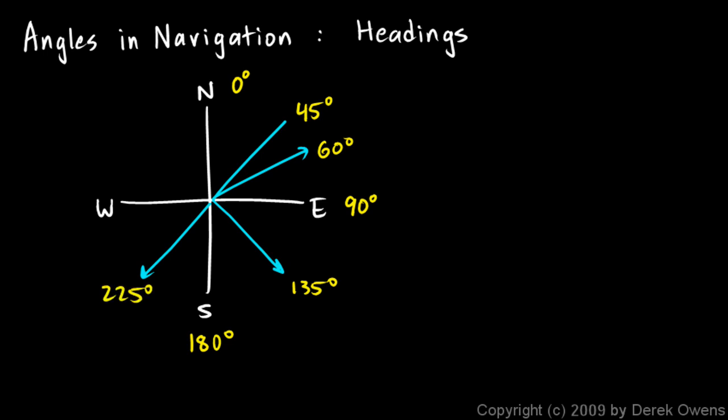Due west would be a 270 degree heading. That rotation or that angle is 270 degrees, 270 degrees clockwise from north. If you're going northwest, that would be a heading of 315 degrees. This rotation is 315 degrees. 360 degrees takes you full circle. A heading of 360 degrees is the same thing as a heading of 0 degrees.